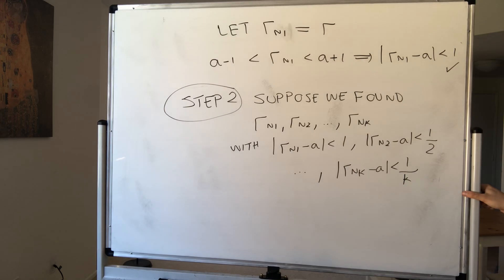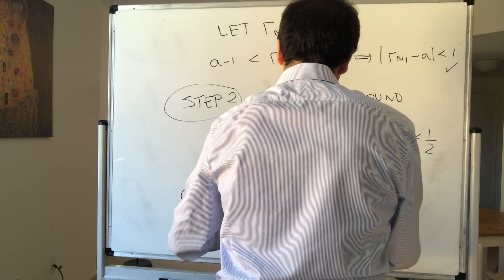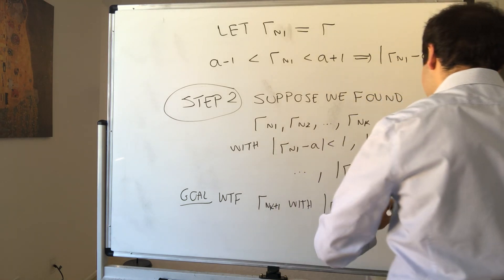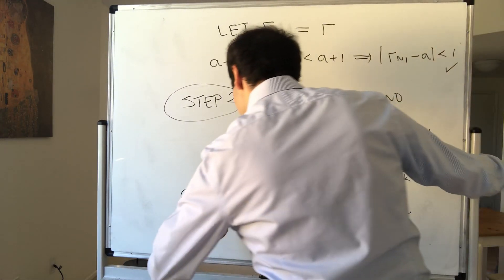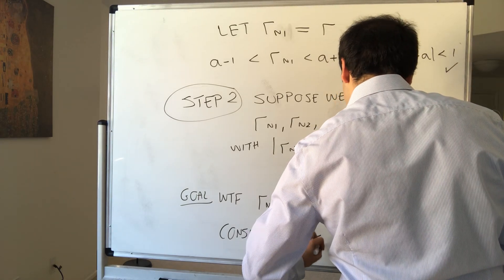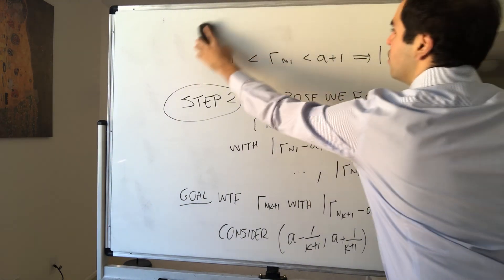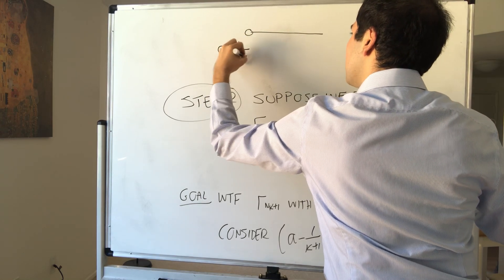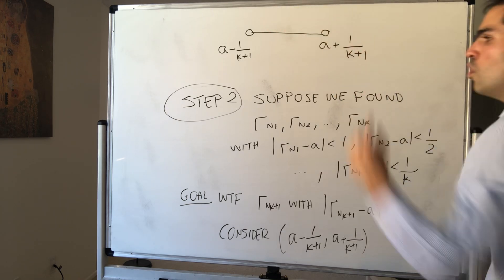Our goal is to find r_{n_{k+1}} with |r_{n_{k+1}} − a| < 1/(k+1). Just as before, consider the interval (a − 1/(k+1), a + 1/(k+1)) — a very small interval of length 2/(k+1).